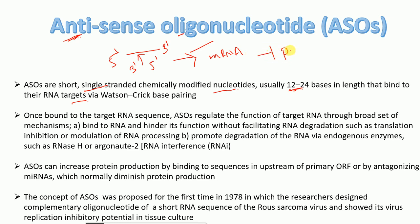These oligonucleotides are designed to be complementary to our target mRNA. When they bind to the target mRNA, they inhibit or degrade mRNA production, which in turn results in inhibition of target protein synthesis. This is the core mechanism of action of antisense oligonucleotides.